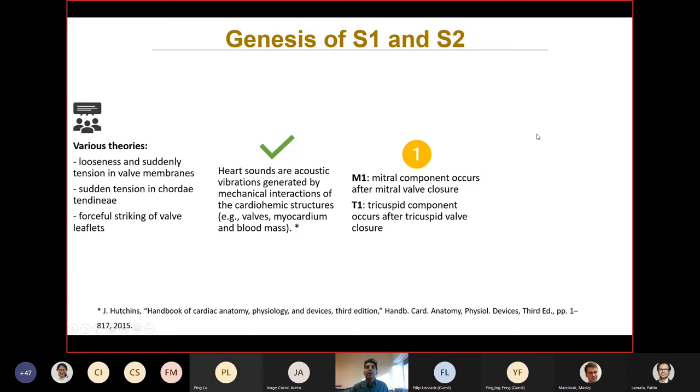S1 has two components: mitral component, which is generated by mitral valve, and tricuspid component from tricuspid valve. And also S2 has two components as well: aortic component and pulmonic component. So we have four components in the two major heart sounds.